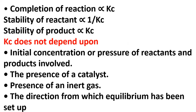The equilibrium constant does not depend on certain factors: one is the initial concentration or pressure of the reactants and products involved. Another is the presence of a catalyst — a catalyst will speed the rate of reaction but cannot change the equilibrium position and state of a system. Also, the presence of an inert gas, like noble gases (elements in group 8, most of which are inert), and also the direction from which equilibrium has been set up.